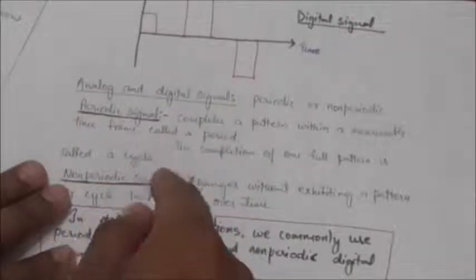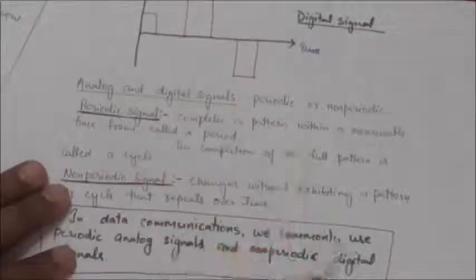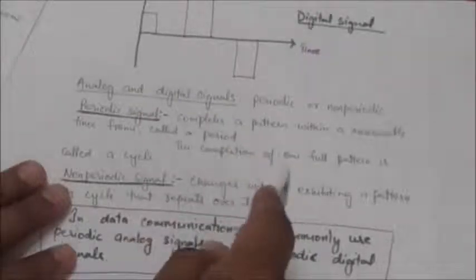It repeats that pattern in subsequent identical periods. The completion of one full pattern is called a cycle.